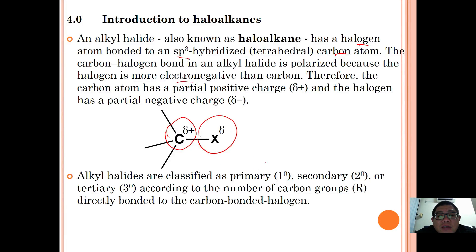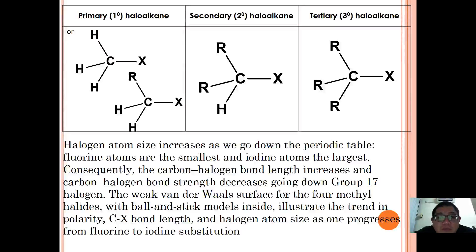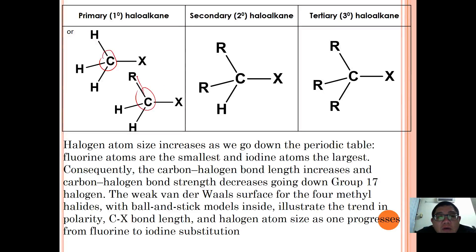Alkyl halides can be classified into three classes: primary, secondary, and tertiary, depending on the number of carbon groups surrounding the carbon bonded to the halogen. For primary haloalkanes, zero or one carbon is bonded to the carbon bearing X. For secondary haloalkanes, two carbons surround that carbon. For tertiary haloalkanes, three carbons are bonded to the carbon bearing X.